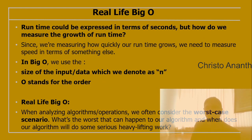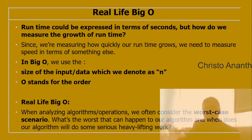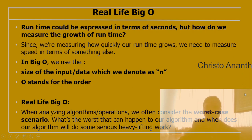In Big O, we express runtime in terms of the size of the input data, denoted as n, and O represents the 'order.' So O(n) means order of the input. Since we're measuring how quickly runtime grows, we need to measure speed relative to n.